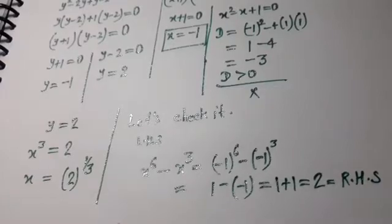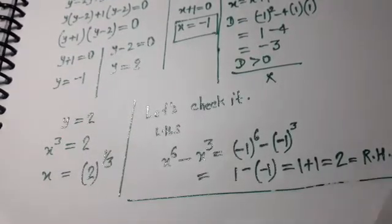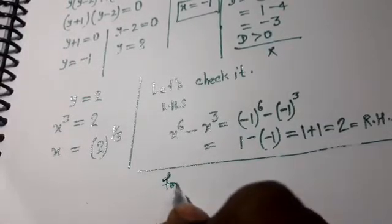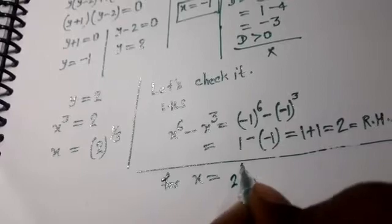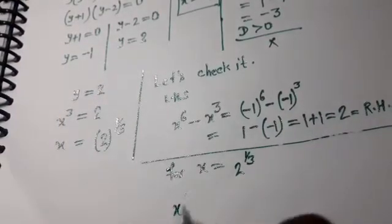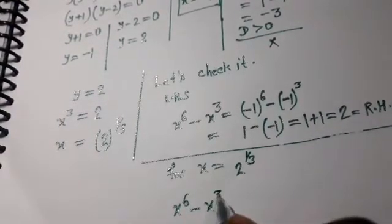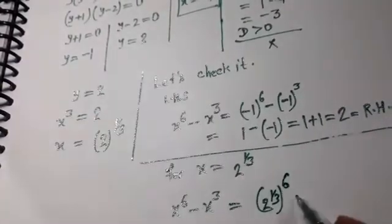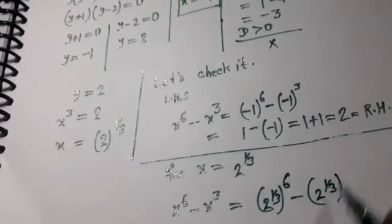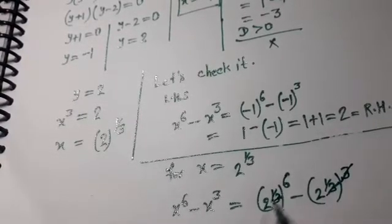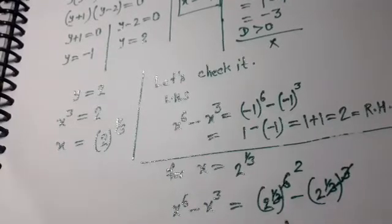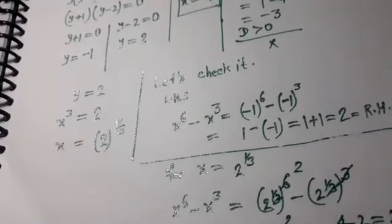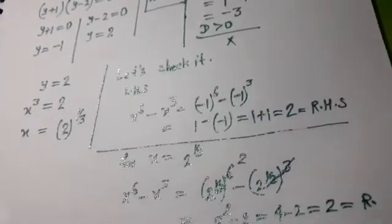For x equal to 2 to the power 1 upon 3: x to the power 6 minus x to the power 3 equals (2 to the power 1/3) to the power 6 minus (2 to the power 1/3) to the power 3, which equals 2 to the power 2 minus 2 to the power 1, equals 4 minus 2 equals 2, which is the right hand side.